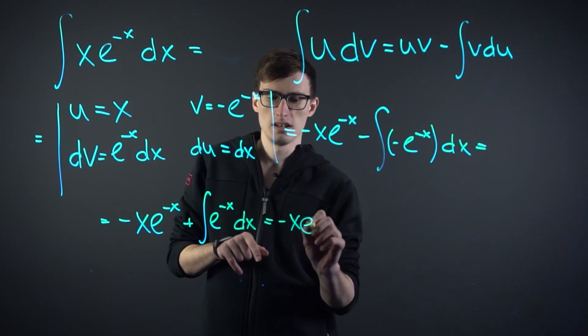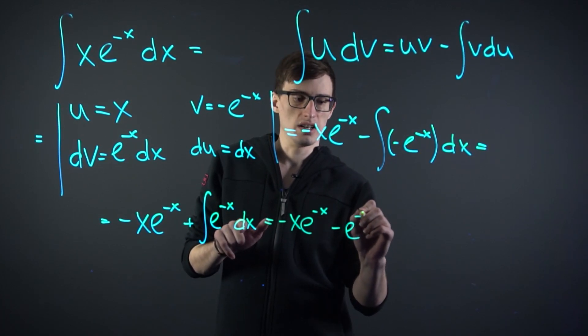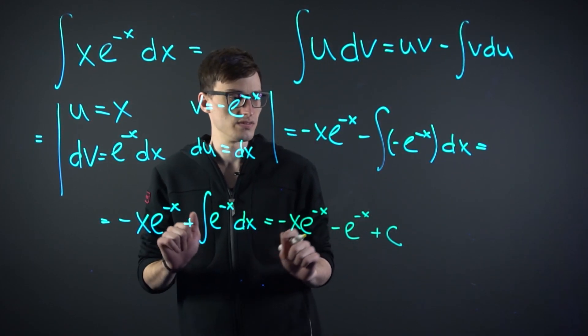So we have minus x e to the minus x, minus e to the minus x, and of course, plus c, because this is an undefined integral.